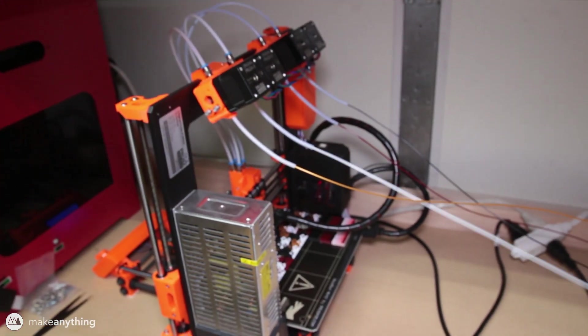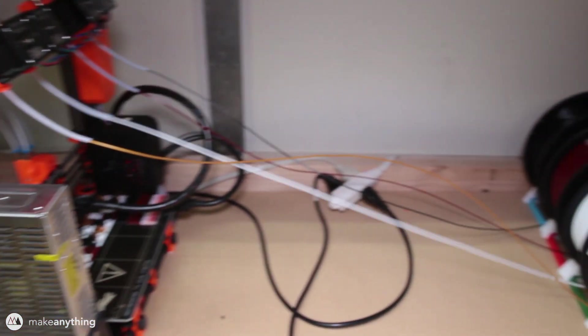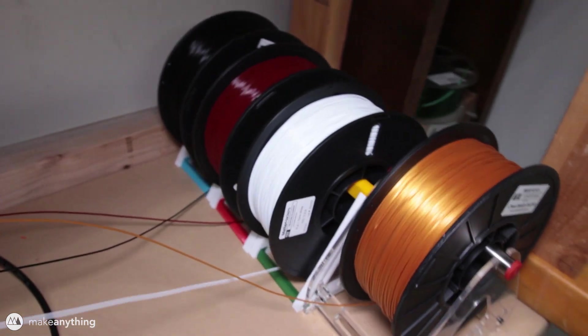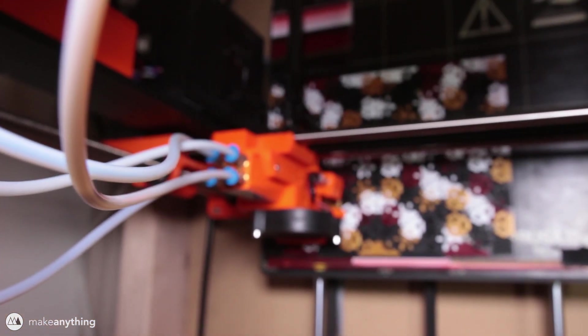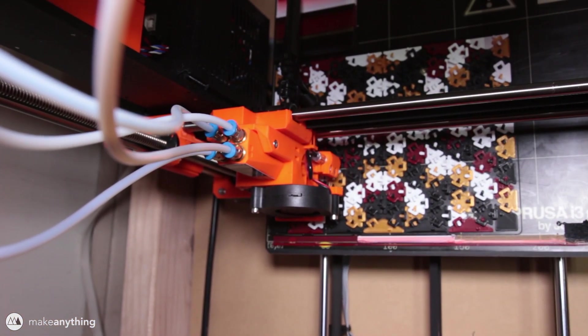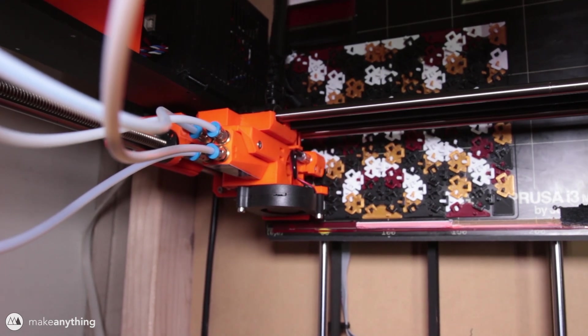Up top there are four extruders, one for each spool of filament and those are all fed into the single hotend. All it takes is a special g-code to make sure that only one color is fed in at a time.